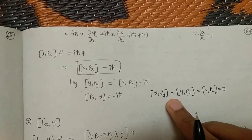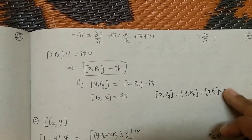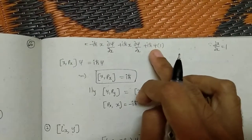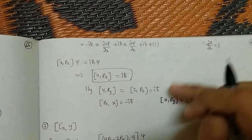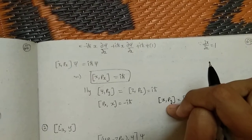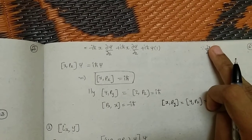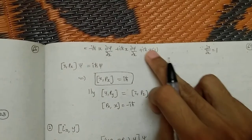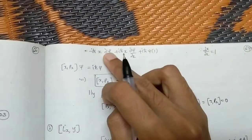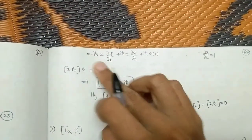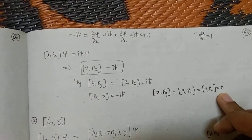Another important commutator relation: [x, py] = [y, pz] = [z, px] = 0. In the term [x, py], we encounter the partial differentiation of x with respect to y. Partial differentiation of x with respect to x is 1, but partial differentiation of x with respect to y is 0. So we get 0, and both terms cancel as usual — we get dou xi by dou y minus dou xi by dou y, which equals 0. This completes the derivation of commutator relations.